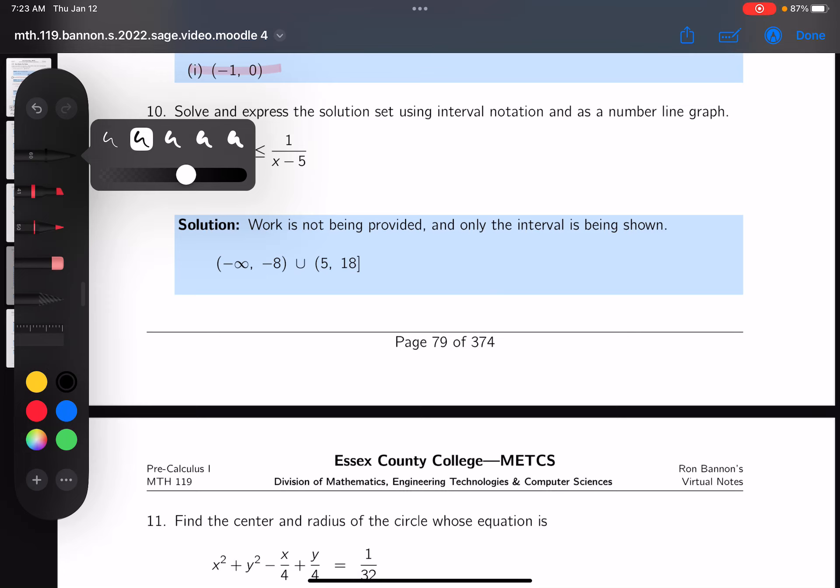Okay, number 10 is an inequality, and it's a rational inequality. What I would recommend to do is just get it compared to 0 initially.